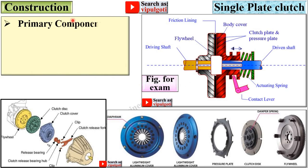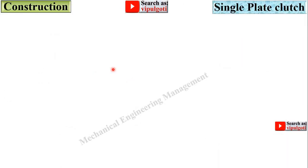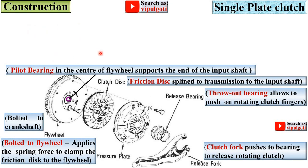Now the construction. Primary components include the flywheel — here you can see this is the flywheel — then the clutch disc, then the pressure plate, and the release bearing. This is the exploded view of the single plate clutch showing: the flywheel, clutch disc, pressure plate, and release bearing.